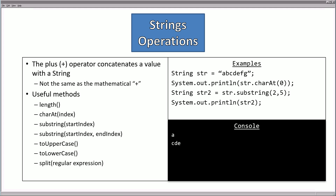Besides operators, some useful methods we use a lot are: length, charAt at some index, substring starting from some index, substring starting from some index and ending at some index, toUpperCase, toLowerCase, and split using a regular expression. We can see an example where we create this string ABCDEFG. If we call string.charAt index 0, this is the first character, so our console would print out A. We also see that string2 is set equal to str.substring starting from index 2 and going to 5 exclusively — so starting at C, D, E — which prints out right there.